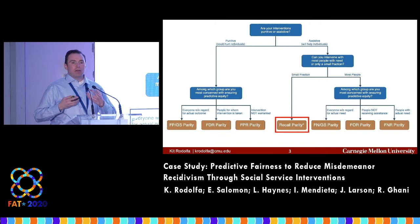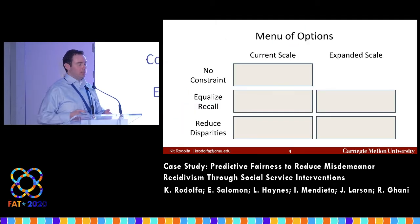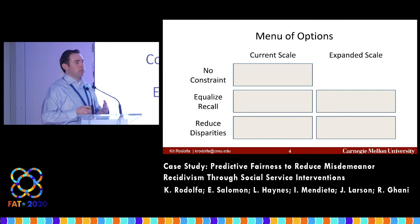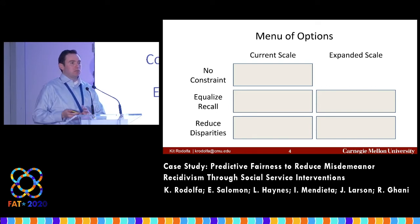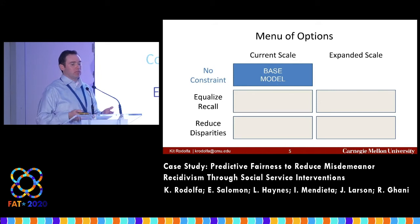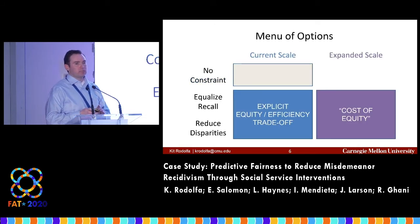Even once you've figured out how to measure fairness in a given context, you still have trade-offs and competing goals to deal with. Our approach to structuring thinking about those trade-offs — turning a nebulous concept into more concrete analysis — is presenting policymakers with a menu of options. The most basic is to ignore fairness and focus purely on efficiency, starting with some underlying base model. But as you bring fairness and equity into the equation, there are different directions and axes to consider.